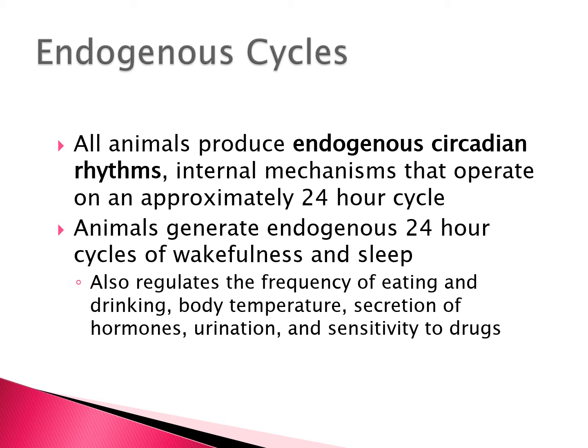All animals have these endogenous circadian rhythms — generated within ourselves. These are internal mechanisms that operate on an approximately 24-hour clock, not an exactly 24-hour clock. There are other aspects of our world that help us reset our cycles. The most clear cycle we have is wakefulness and sleep, but you'll notice times during the day when you're in a better or worse mood, more likely to eat and drink, and your body temperature changes. Hormones, sensitivity to drugs, and urination are all influenced by these endogenous cycles.